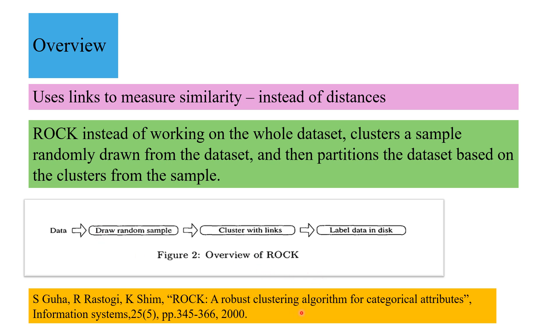For those interested, you can look into the paper. This algorithm for categorical data uses a slightly different concept, links, and works only on samples drawn from the dataset. So it can work on huge size, big data also. It takes a sample, clusters it, and then partitions the dataset based on the clusters from the sample.